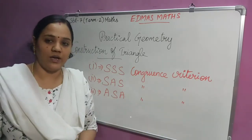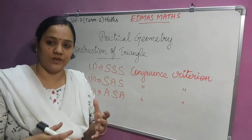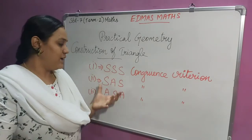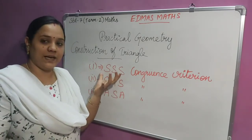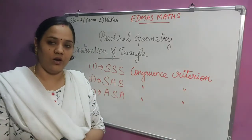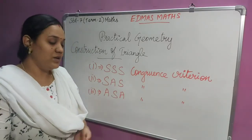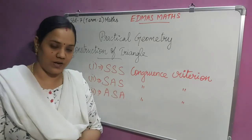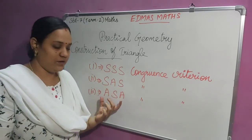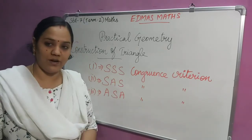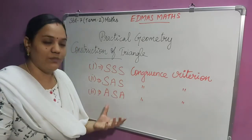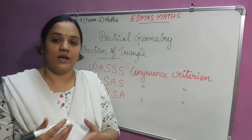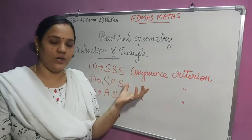In my previous video I explained you about the congruence of a triangle and also about SSS, SAS, and ASA. SSS means all three sides of a triangle will be given and we are going to construct a triangle. The next type is SAS — two sides and one angle will be given and we have to draw the triangle. Then the last one, ASA — two angles and one side will be given and we have to draw the triangle.